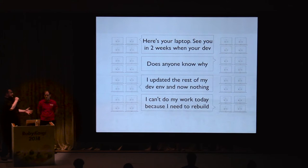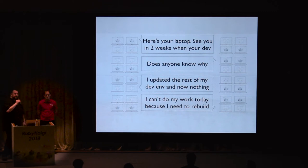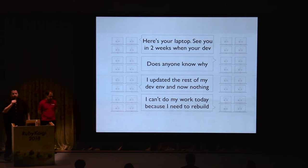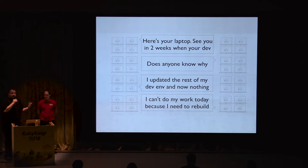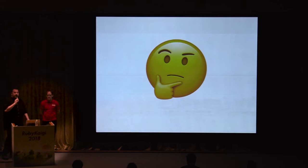These are some examples summarized of conversations that were happening for employees of the company: 'Here is your laptop and we'll see you in two weeks when your development environment is running.' 'Does anyone know why the API gateway crashes in a loop?' 'I updated the rest of my development environment and now nothing works.' 'I can't do my work today because I need to rebuild my development environment.' It was obviously unsustainable and only more problematic over time. Our friends and co-workers were becoming increasingly frustrated, which meant that the company wasn't being productive.